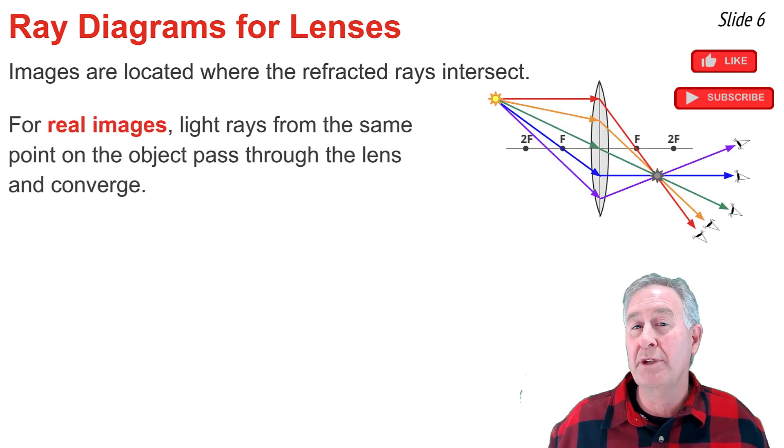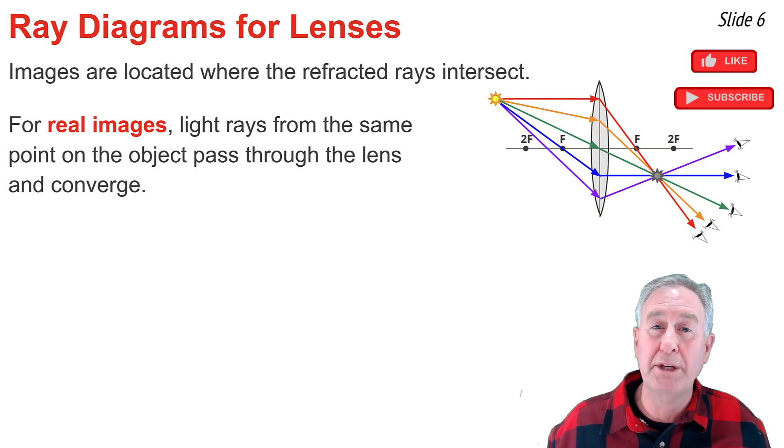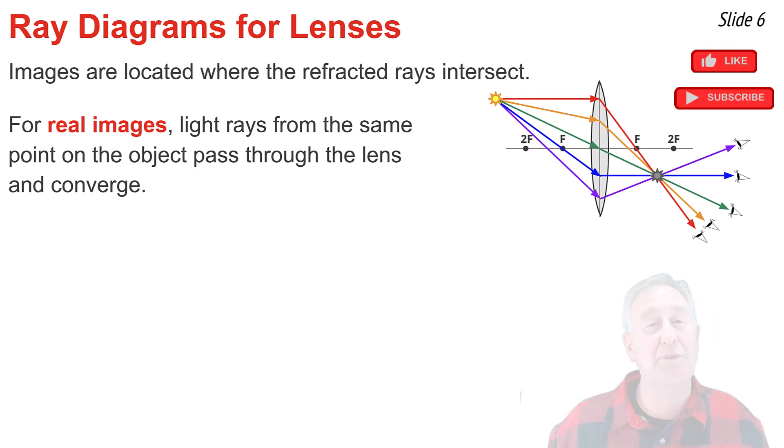For real images, light from the same point on the object will pass through the lens, refract, and converge or come together at an intersection point. That's the image location for a real image.